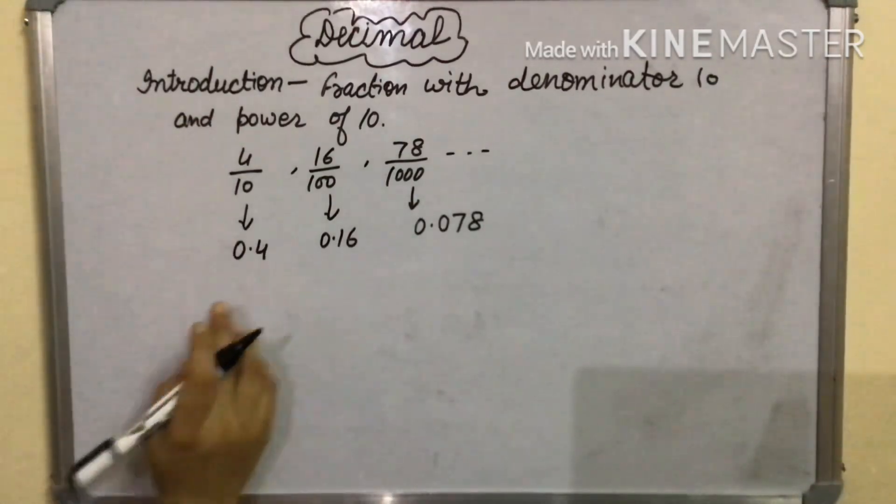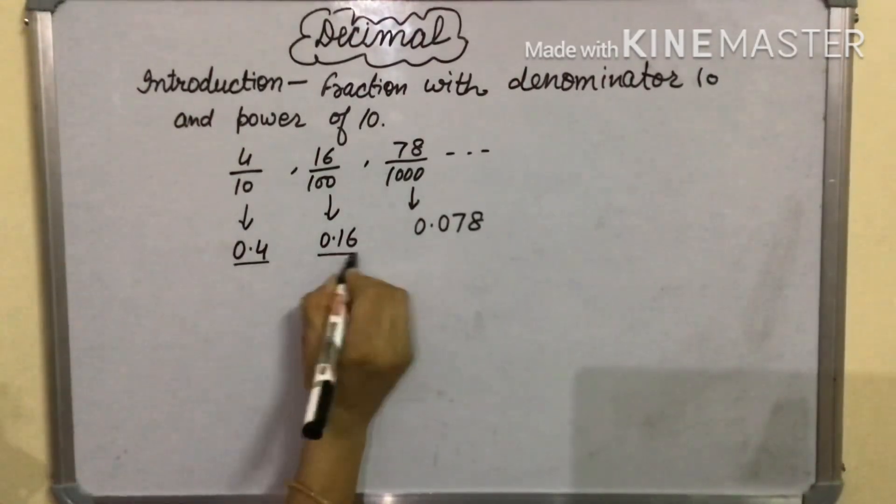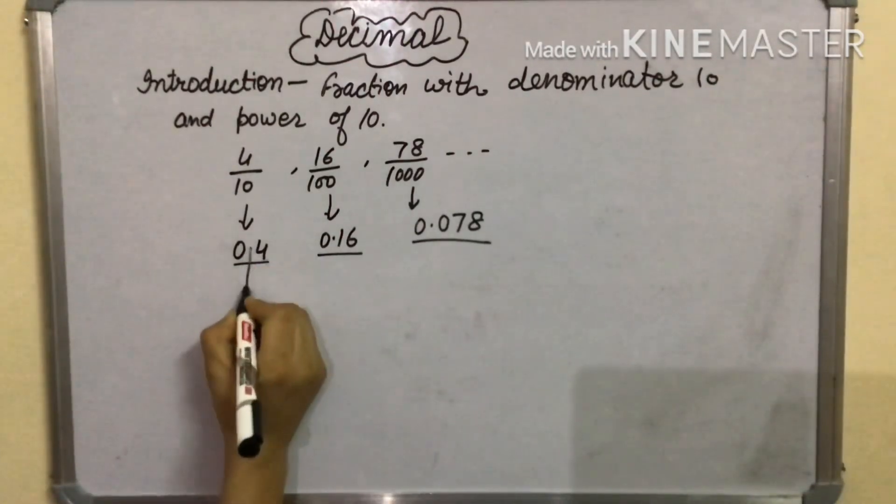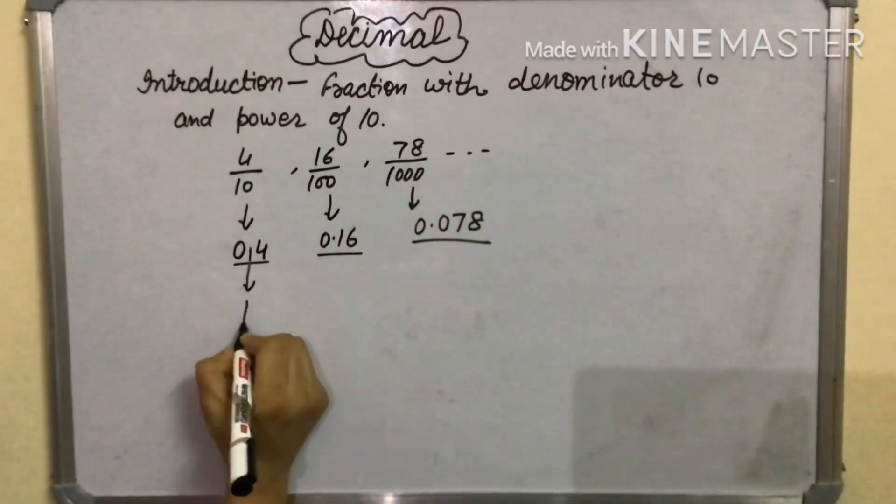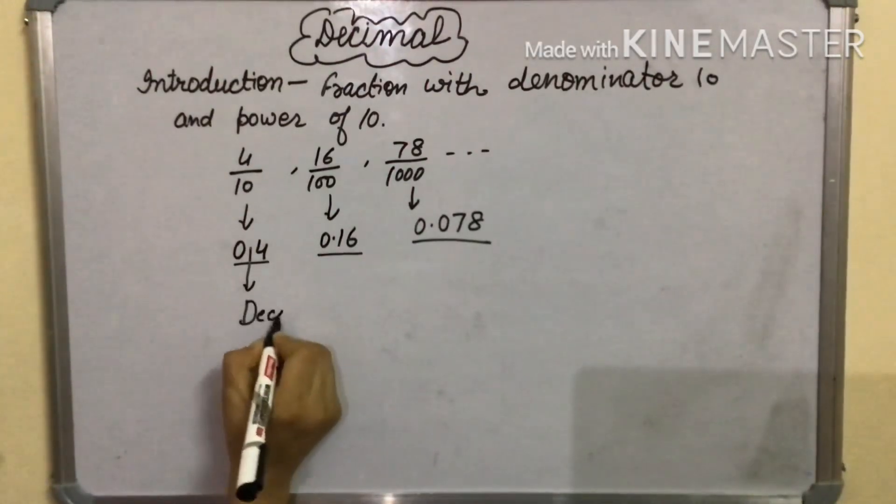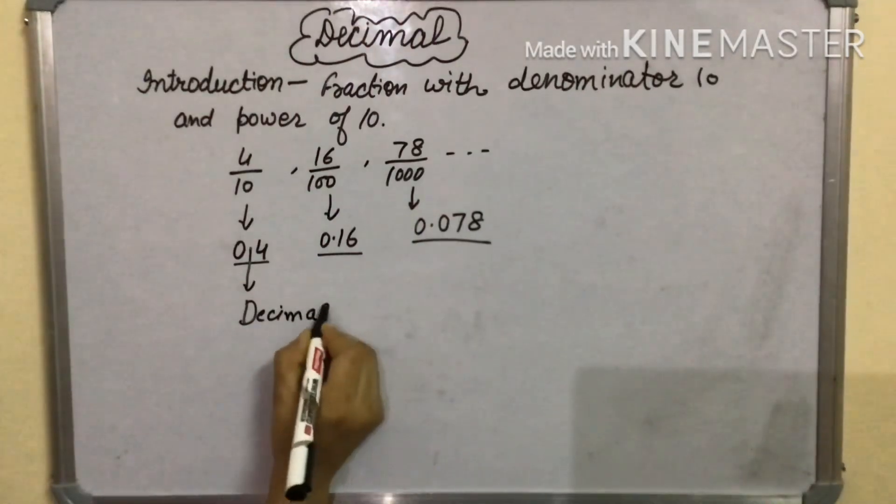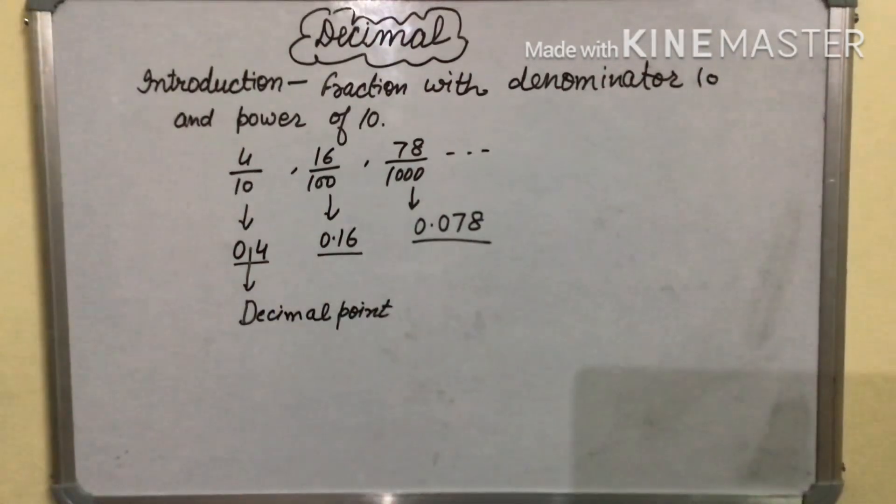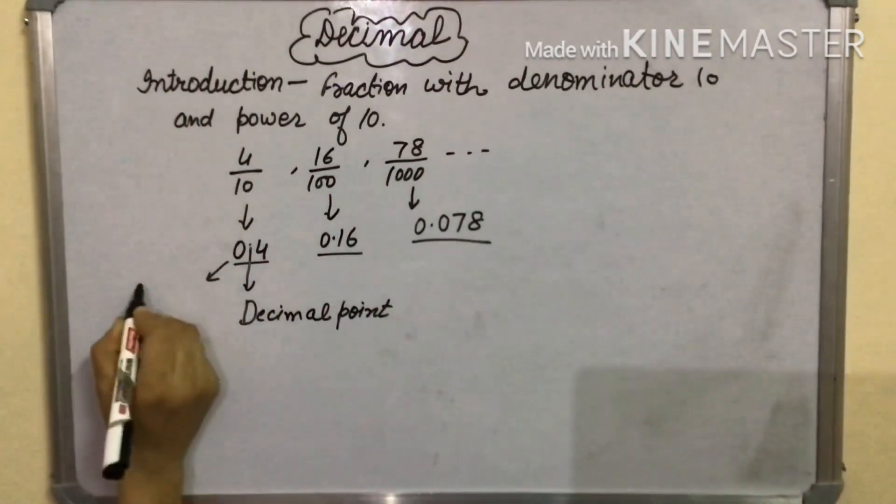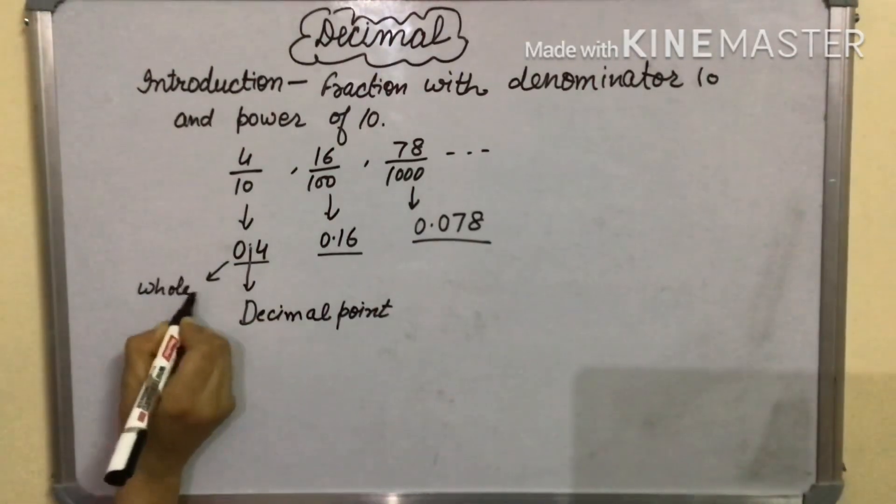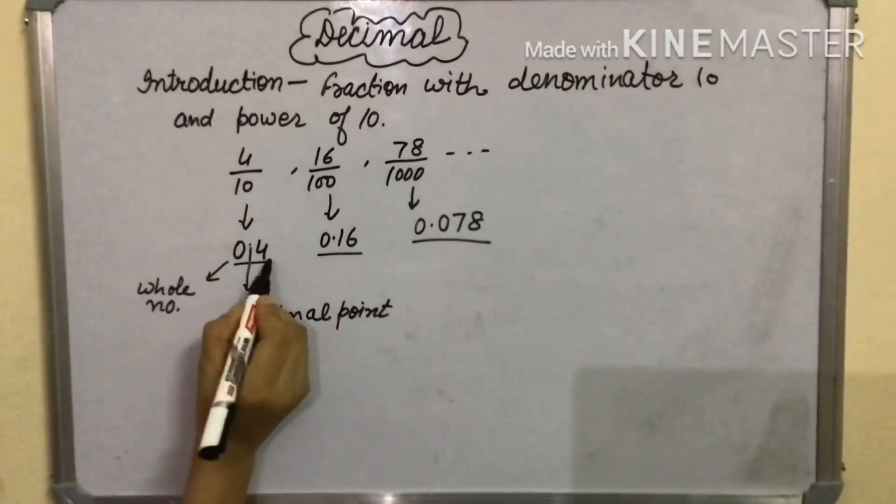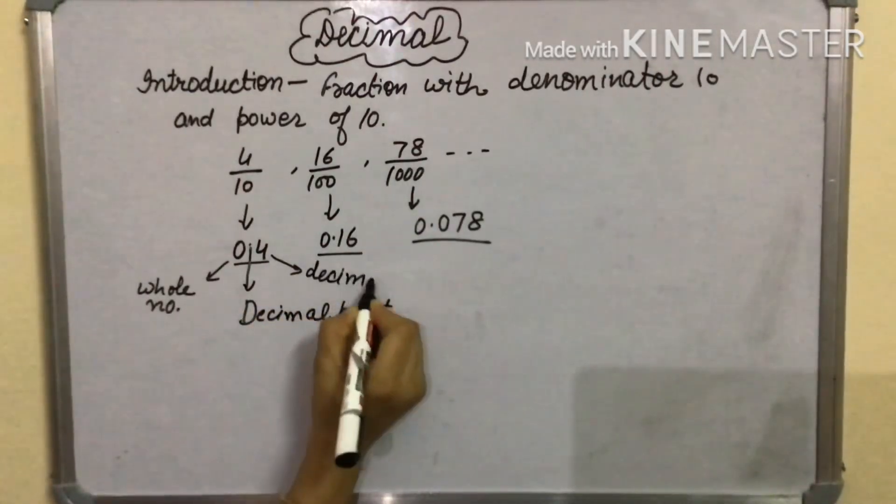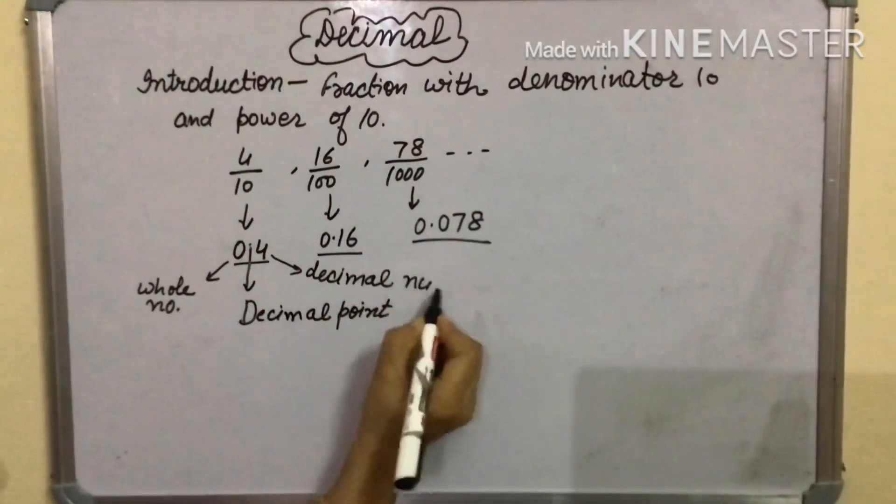Now you can see that every decimal number has two parts and these two parts are separated by a point and this is known as decimal point. Decimal number has two parts: first is whole number and second is decimal part.